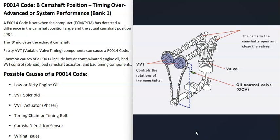Most modern cars have what's called variable valve timing, which allows the computer to adjust the timing as the engine's running. It's a really good system — it can improve gas mileage and improve power at different RPMs. When you get a P0014 code, the computer is seeing some kind of problem with the engine's timing.